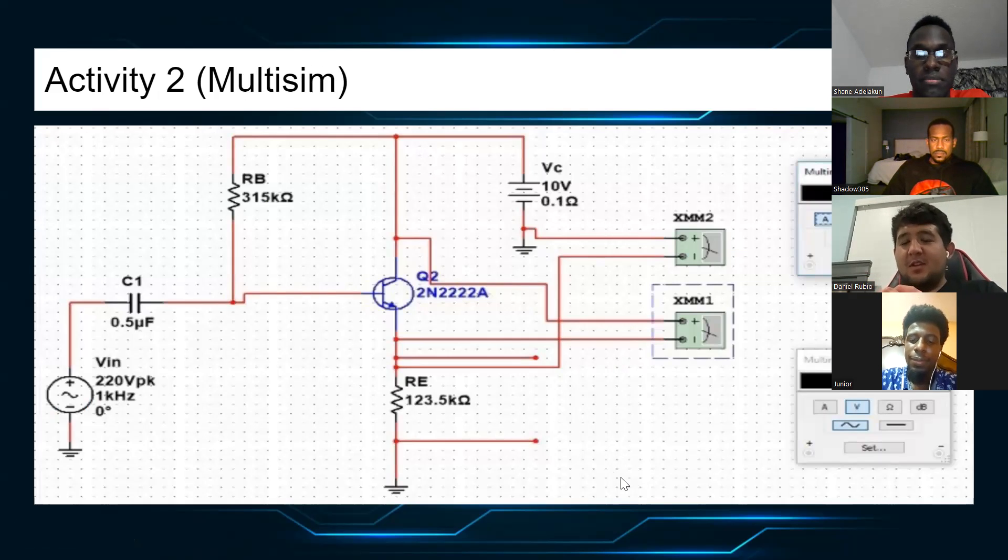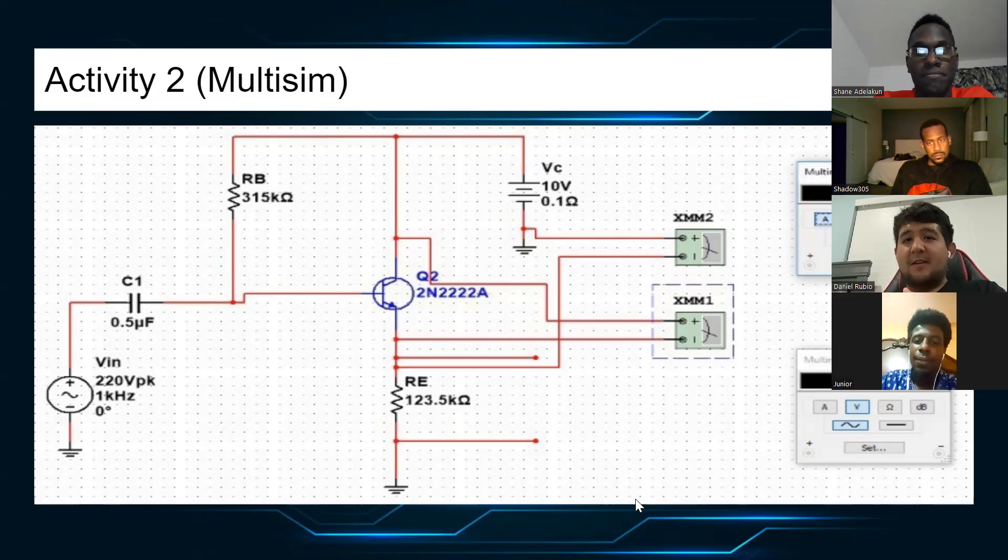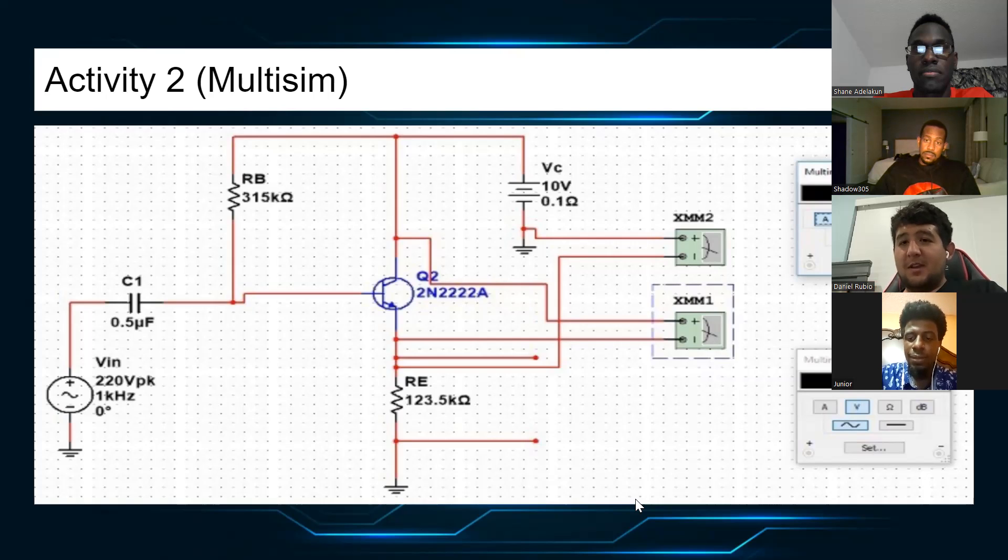Okay, this is activity two Multisim. Same setup, similar way for activity one but different. Where we have the capacitor 0.5 microfarad. RB resistor would be 315 kilohms. The VCC would be 10 volts with 0.1 ohms. And where we find the middle, it's Q2, 2N2222A, basically a type of amplifier used in the circuit. RE, below that, is 123.5 kilohms where it's connected to the circuit. Where we find the measurements on the right side of the screen, 2.085 milliamps for the current, and below that is for the voltage, 6.067 volts.